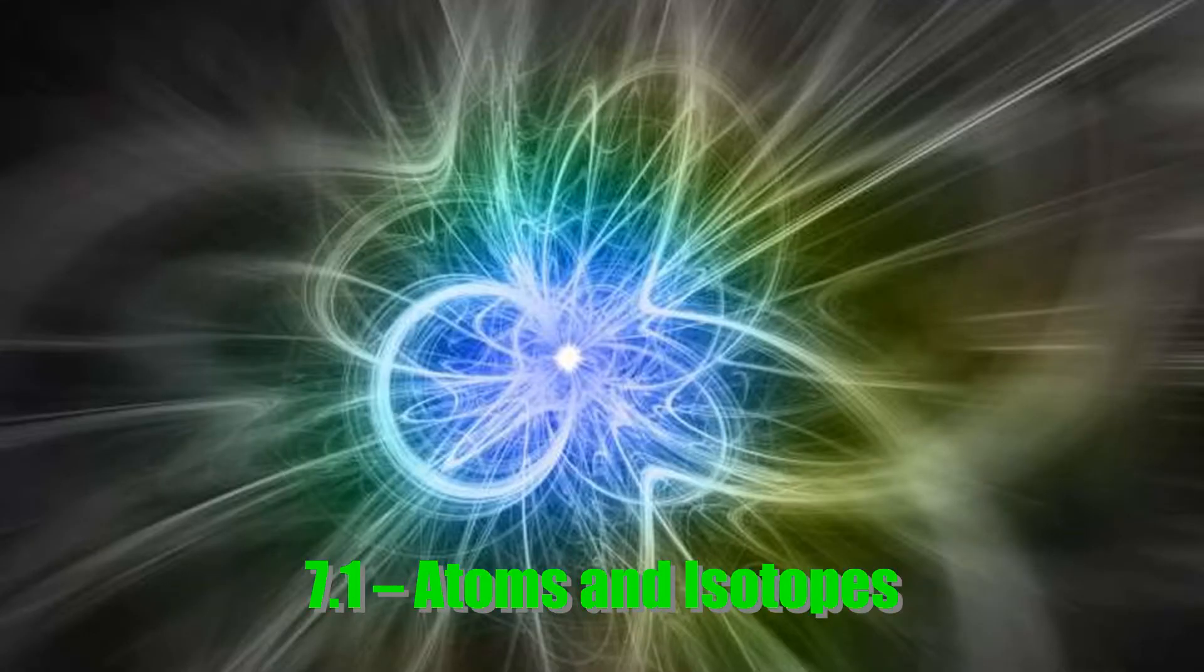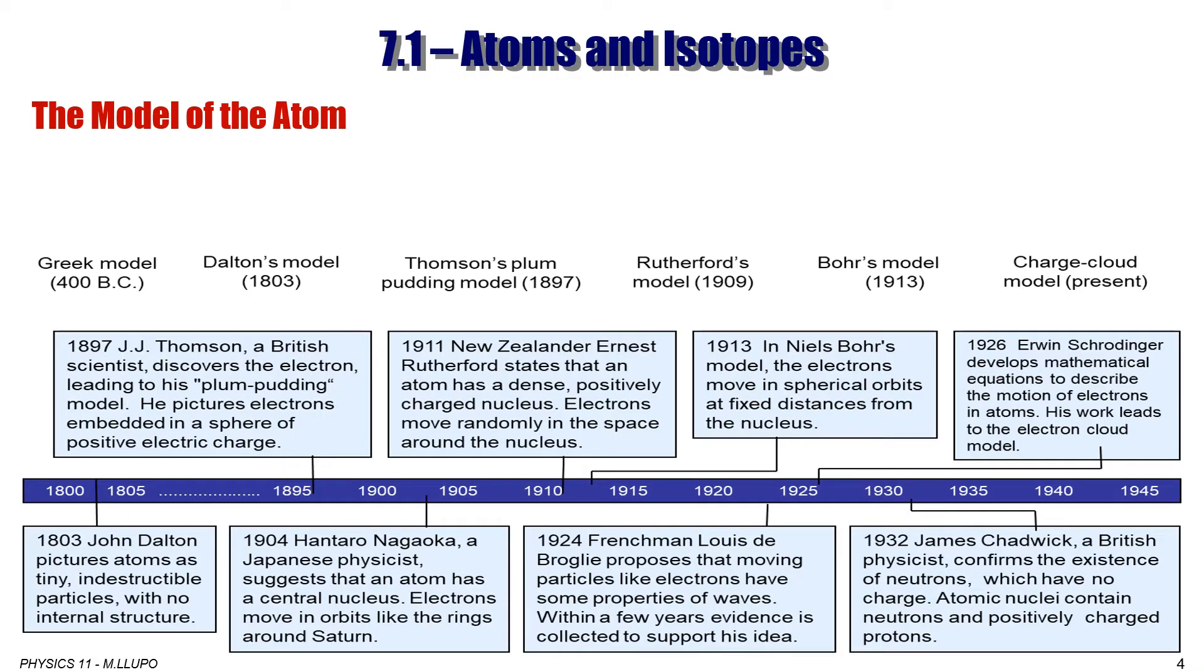This is section 7.1, Atoms and Isotopes. The model of the atom has evolved throughout centuries. It started with the Greek model 400 BC as the smallest indivisible particle that made up all matter. The name atom comes from a Greek word that means indestructible, indivisible, or unbreakable. This model stayed true for more than 22 centuries.